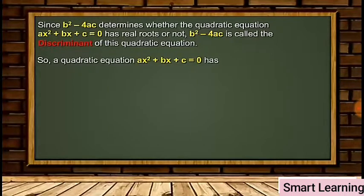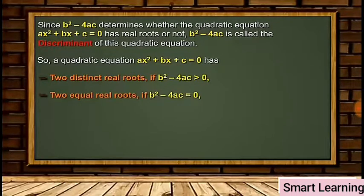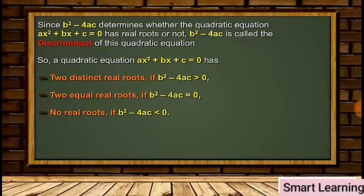So a quadratic equation ax² + bx + c = 0 has two distinct real roots if b² - 4ac > 0, two equal real roots if b² - 4ac = 0, and no real roots if b² - 4ac < 0.